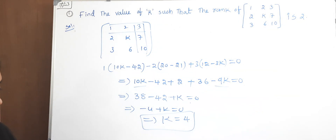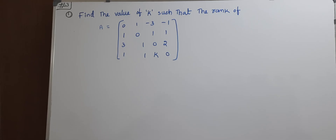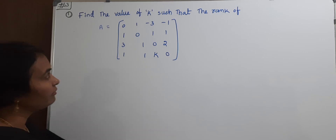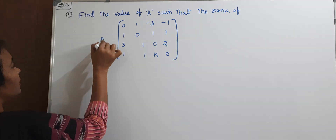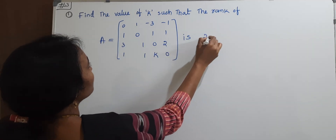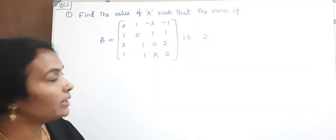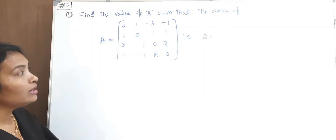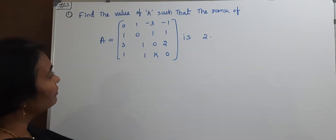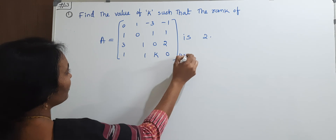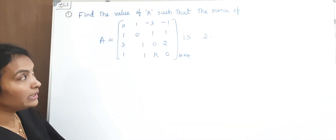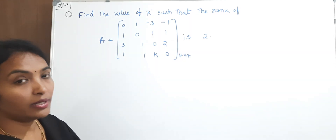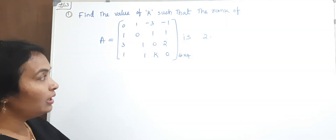Next problem. Our second problem is: find the value of k such that the rank of A is 2. This problem is a 4×4 matrix. For rank 2, the number of non-zero rows is 2. We use row reduction — just like our previous operations, we need to make elements below the principal diagonal equal to 0.